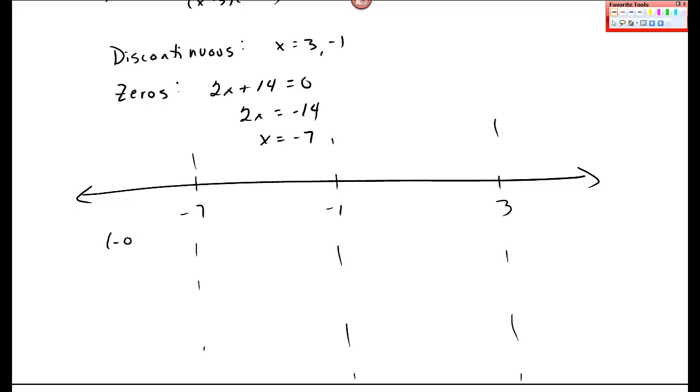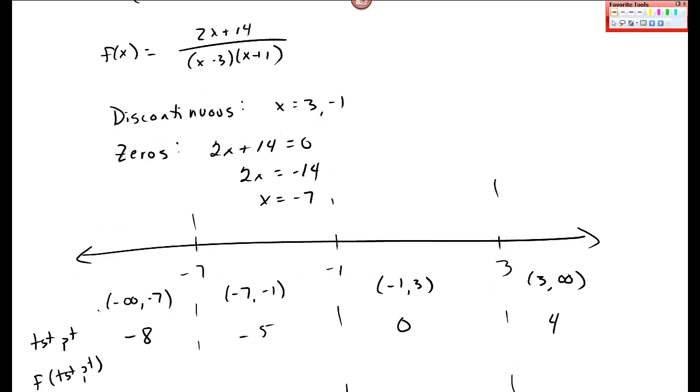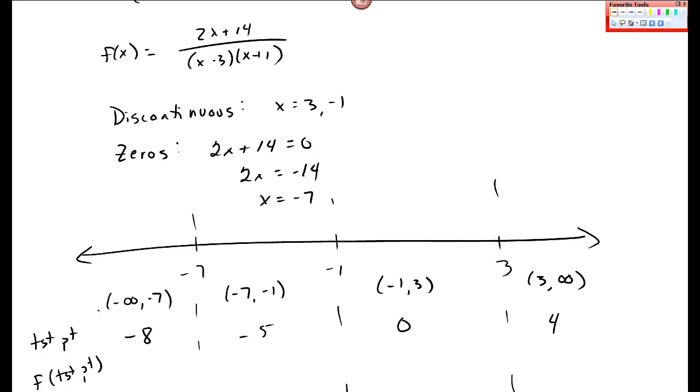Here's my interval, minus infinity to negative 7, negative 7 to negative 1, negative 1 to 3, and 3 to infinity. And then I pick a test point in here, negative 8, negative 5, 0, and 4, and my function f of my test point. Okay, and I'll go back up and put in this function that I have.